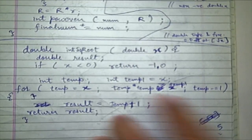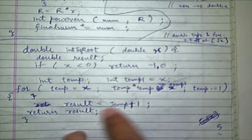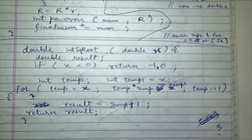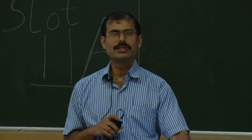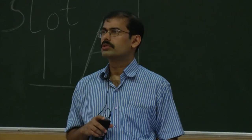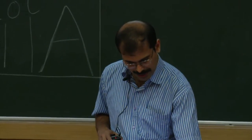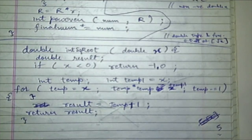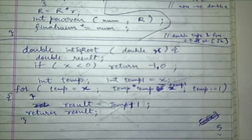Then: for temp = x, while temp * temp >= temp1, temp -= 1. You are starting from the integer part of x, decrementing by 1, and checking whether the product is still greater than or equal to x. Does anybody see any problem with this? Starting from the integer part of x, decrementing it by 1, and checking whether the square of that is greater than or equal to the integer part of x already had.